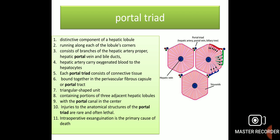The portal triad is a distinctive component of a hepatic lobule, running along each of the lobule's corners. It consists of branches of the hepatic artery proper, hepatic portal vein, and bile ducts — that is why it is called the portal triad. The hepatic artery carries oxygenated blood to the hepatocytes. Each portal triad consists of connective tissue bound together in the perivascular fibrous capsule or portal tract. It is a triangular-shaped unit containing portions of three adjacent hepatic lobules with the portal canal in the center.